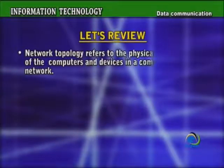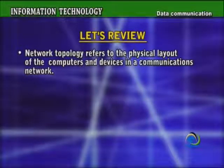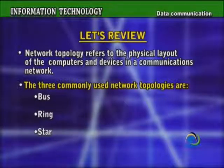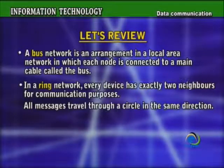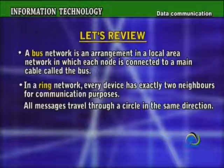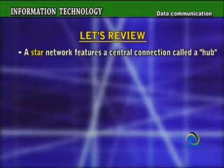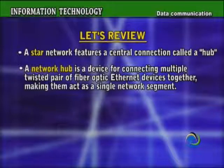Let's review. Network topology refers to the physical layout of the computers and devices in a communications network. The three commonly used network topologies are Bus, Ring, and Star. A bus network is an arrangement in a LAN in which each node is connected to a main cable called the bus. In a ring network, every device has exactly two neighbors for communication purposes, and all messages travel through a circle in the same direction. A star network features a central connection point called a hub — a device for connecting multiple twisted pair or fiber-optic Ethernet devices together, making them act as a single network segment.